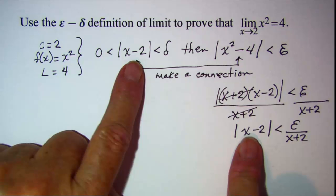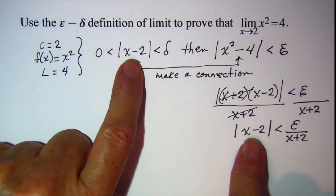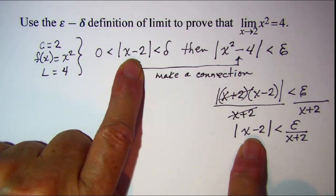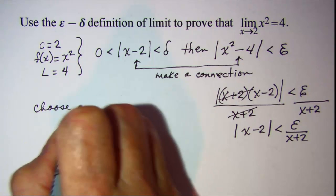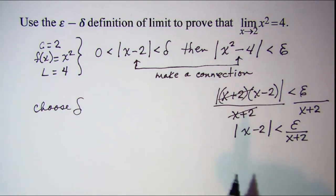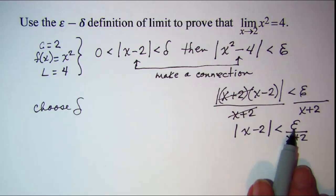So now we have our connection. We have our absolute values the same here, so this tells us that we need to choose delta to be equal to epsilon over x plus 2.